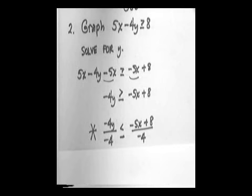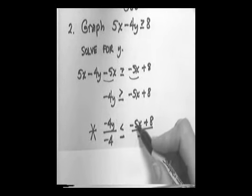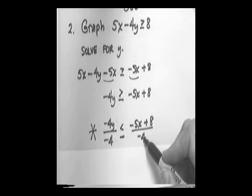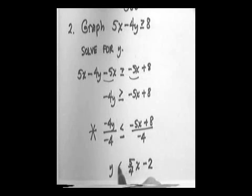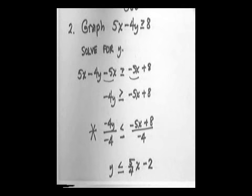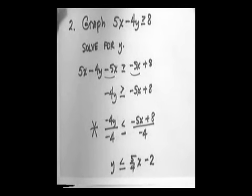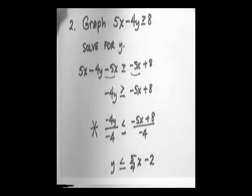On the left, the negative 4 cancels. On the right, we decompose the fraction: negative 5x over negative 4 is 5 fourths x, and positive 8 over negative 4 is negative 2. So we get y is less than or equal to 5 fourths x minus 2.